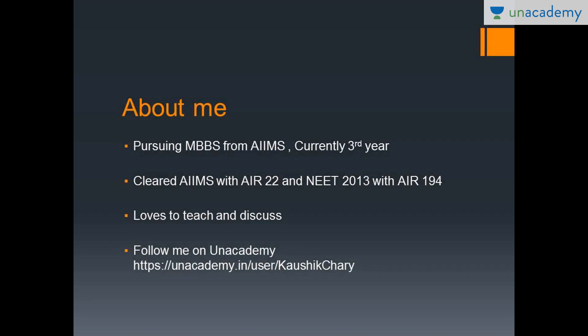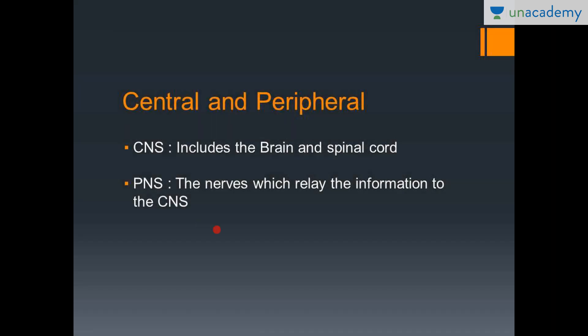I am presently studying my MBBS from Ames and you can follow me on an academy using this link. So the nervous system is mainly divided into two main divisions as we all know: the central nervous system, abbreviated as the CNS, and the peripheral nervous system, abbreviated as the PNS, and I will refer to them as CNS and PNS from now onwards.